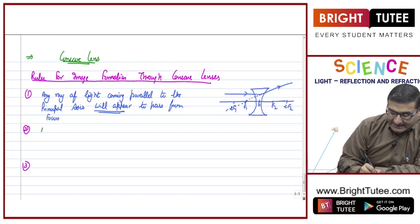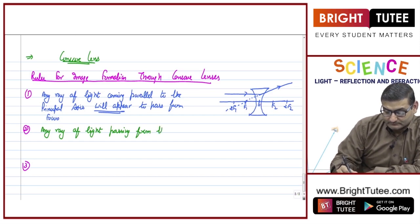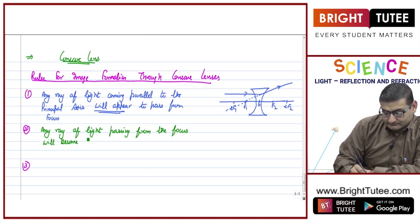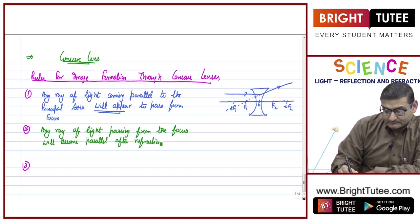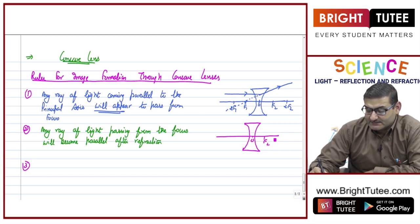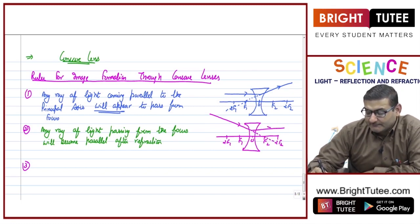The second rule is just the opposite: any ray of light passing through the focus will become parallel after refraction. In the figure for the concave lens, with the principal axis, optical center, f2, twice f2, f1, and twice f1 labeled, any ray of light coming through the focus will, after refraction, become parallel to the principal axis.